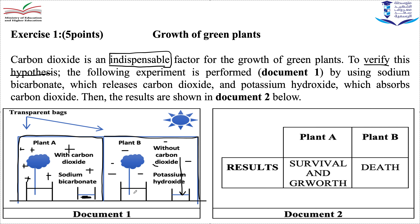Both plants have mineral salts, sunlight, and water. The only difference is carbon dioxide, because I am studying the importance of carbon dioxide. Be careful about the variable factor — I have to make carbon dioxide the variable factor. For example, if I were studying the importance of sunlight, I would expose one plant to sunlight and put the other in darkness. Here, the variable factor is carbon dioxide; sunlight is the same for both plants A and B.